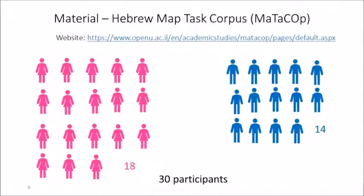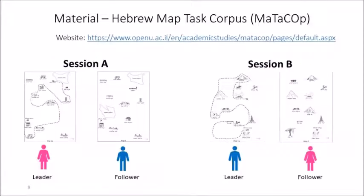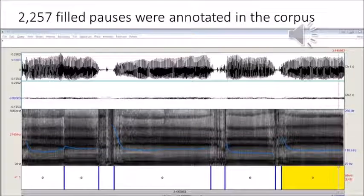Our analysis is based on the Hebrew Maptas corpus, Matakop. We chose 30 spoken dialogues from this corpus. In this corpus, each speaker participated twice with the same interlocutor, once as a follower and once as a leader. In each session, participants were given a different map. This pairwise setting allows comparisons of the speaker's vocal characteristics in both roles with the same interlocutor. We believe this semi-structured setting will abolish the effect of variables that affect the rate of filled pauses, such as the communicative situation, the degree of familiarity between the interlocutors, or the emotional load.